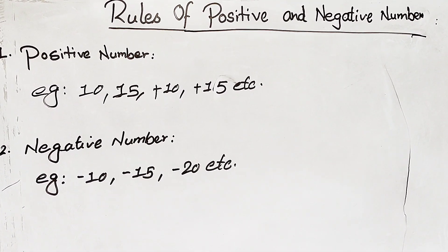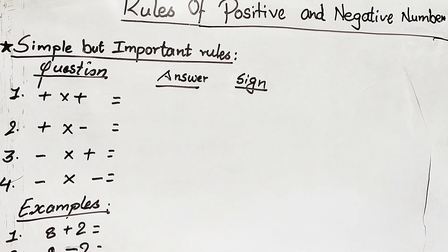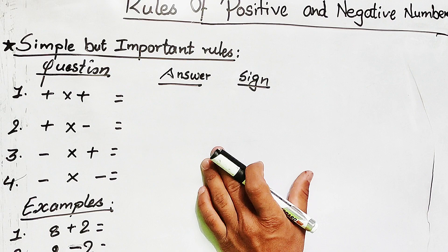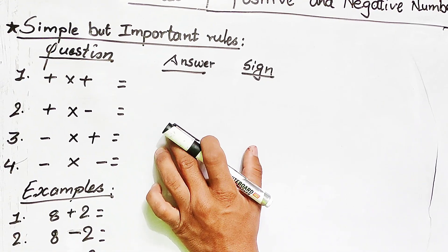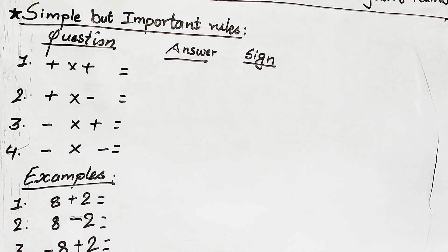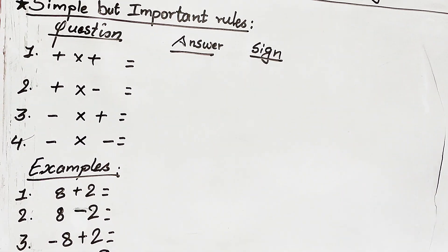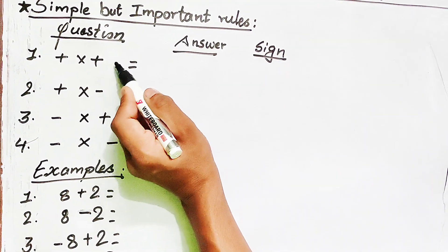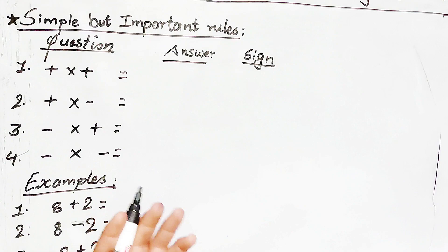So this is the positive number and negative number description. Now we know the simple and important rule. This is the answer. Positive number and negative number rules — the main basic question. We have to show this answer with a sign.